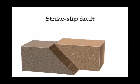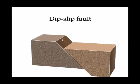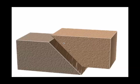So if you have a strike-slip fault, that means the movement has occurred along the strike — in other words, horizontal movement. Whereas in a dip-slip fault, the movement went down the dip. An oblique fault means that you have both strike-slip and dip-slip movement at the same time.